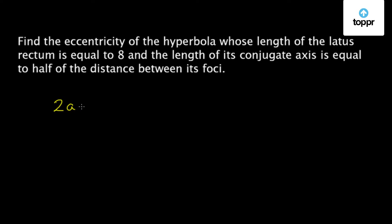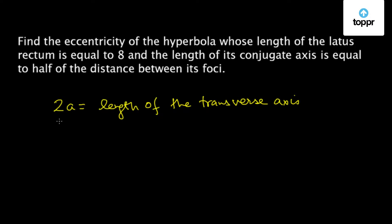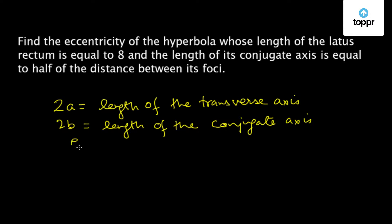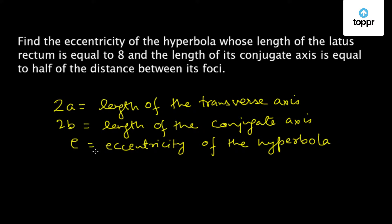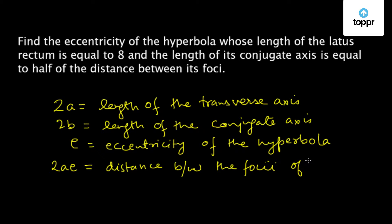Let us try to solve this problem. We know that 2a is equal to the length of the transverse axis, 2b is equal to the length of the conjugate axis, and E is equal to the eccentricity of the hyperbola. Also, we know that 2ae is equal to the distance between the foci of the hyperbola.